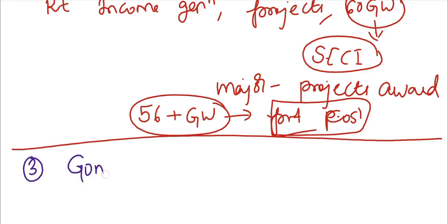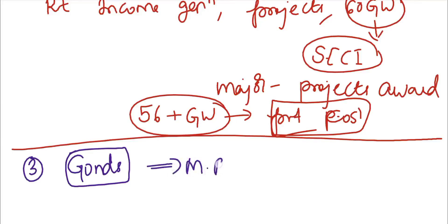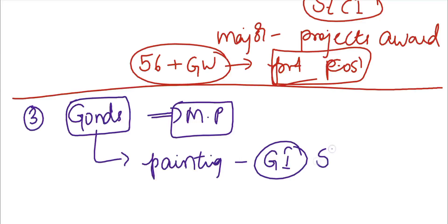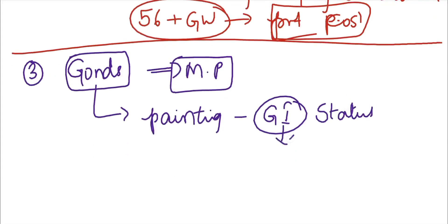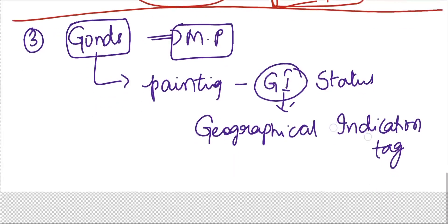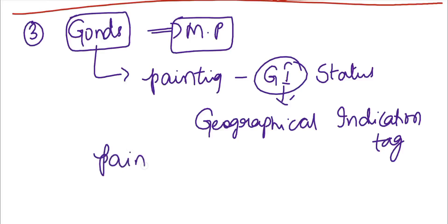The next article is about the Gond tribe. From an exam perspective, the Gond people are located in Madhya Pradesh. Recently, Gond painting received a GI — Geographical Indication — tag. The Geographical Indication tag signifies that this particular painting style has a unique quality specific to the Gond region of Madhya Pradesh.